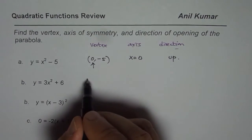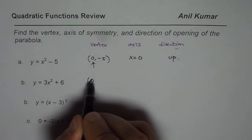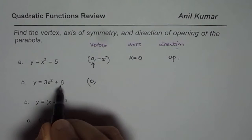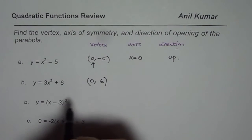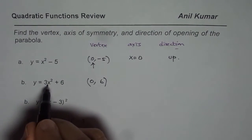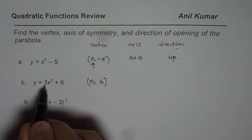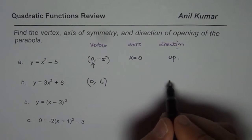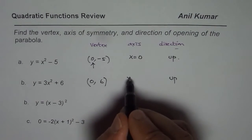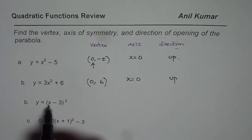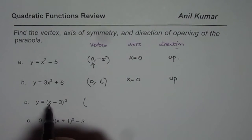In this case, the vertex will be at x equals 0, but the y-value is 6. If I substitute 0 here, I get y equals 6. The coefficient is positive, which means it opens up. The axis of symmetry is again x equals 0.